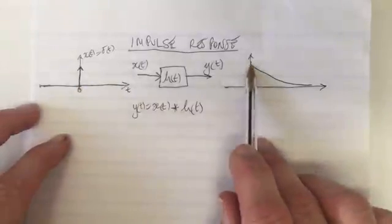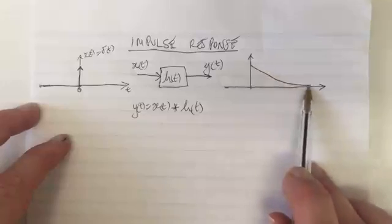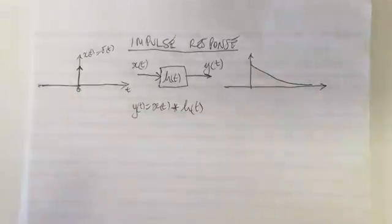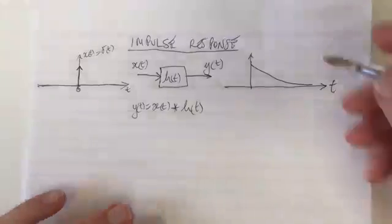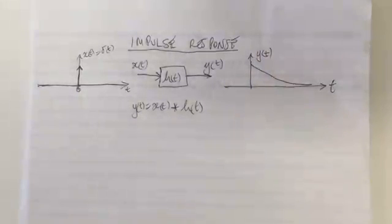And let's say our microphone suddenly responds very quickly, but then dies down, the sound dies down, and it takes a little bit of time for the microphone to return to its steady state. And so this would be y(t). That's why we call it an impulse response.